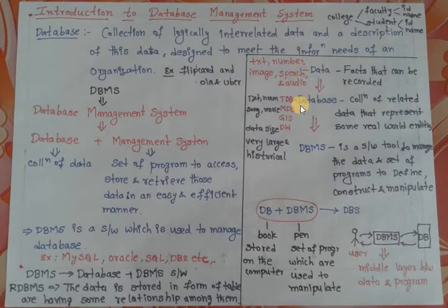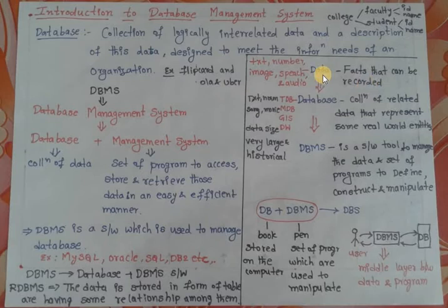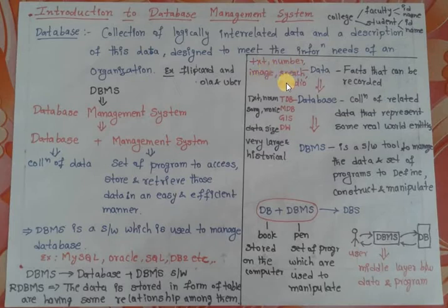Now, what are the key terms in DBMS? The first one is data. Data is called facts that can be recorded. You may find many definitions online, but in DBMS, data means facts that can be recorded. The types of data include text, number, image, speech, and audio.